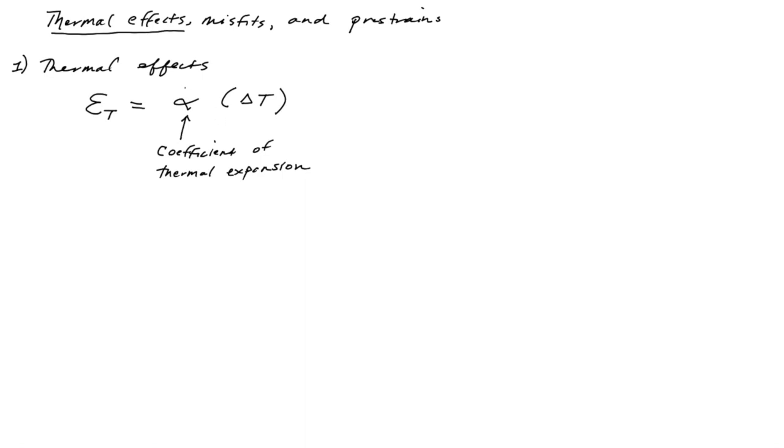And again, it's going to be different for every material. So you can see that the strain, the units of alpha, are going to be 1 over T, because it's multiplied by a unit of time, and then this is dimensionless again. So this is a very simple relationship that you can just simply add on to the mechanical strain.